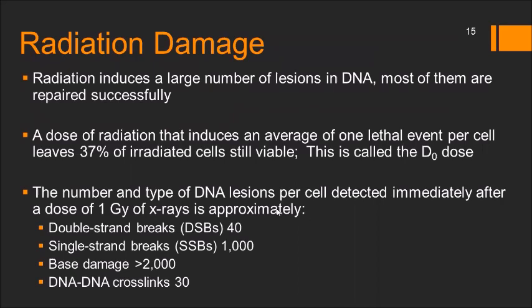Radiation induces a large number of lesions in DNA, most of which are readily and successfully repaired. A dose that induces an average of one lethal event per cell leaves 37% of irradiated cells still viable — this is called the D0 dose. The number and type of DNA lesions per cell detected immediately after a dose of one gray is approximately 40 double strand breaks and 1000 single strand breaks. Base damage is greater than 2000 and DNA-DNA crosslinks are about 30.